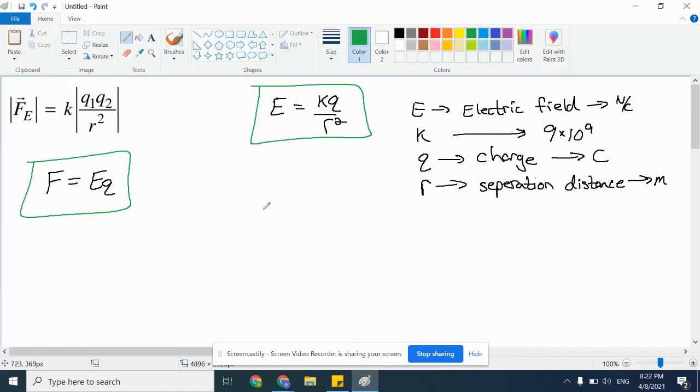You can also use F equals EQ, as in how the force relates to the field. This is very similar to equations you used in mechanics, where we would say g, the acceleration due to gravity on another planet, would be big G, M over R squared. And if we want to find the force of gravity, we would use MG, where g would be the field, M would be the mass. I aligned it this way: G and E are fields, Q and M are charge and mass.